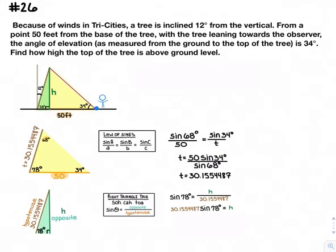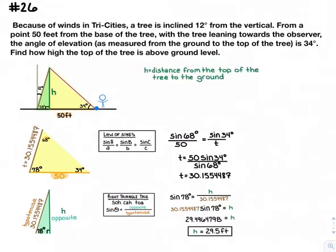Use your calculator to evaluate. Be sure you're in degree mode. The distance from the top of the tree to the ground is 29.5 feet.